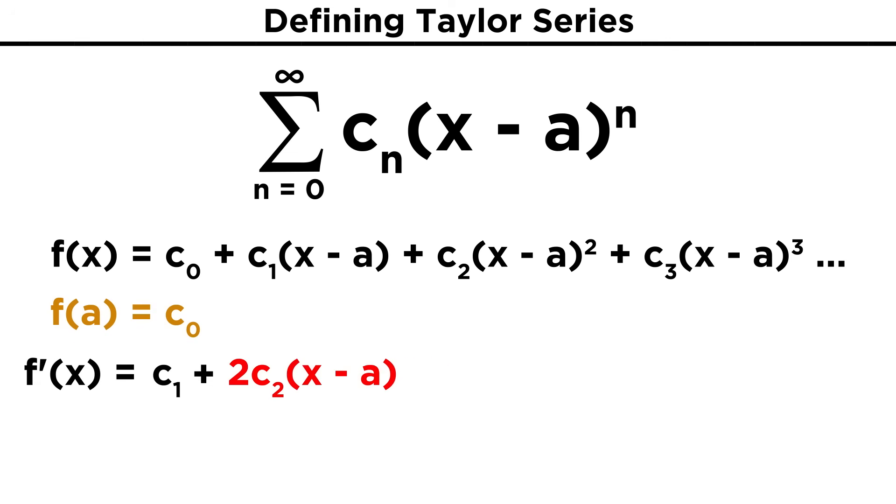So we are left with two c two times the quantity x minus a. The second part of the chain rule will always be one for the rest of these terms, so we can just do the part with the exponent. Three comes down here, and the exponent becomes two. Four comes down here, and the exponent becomes three.